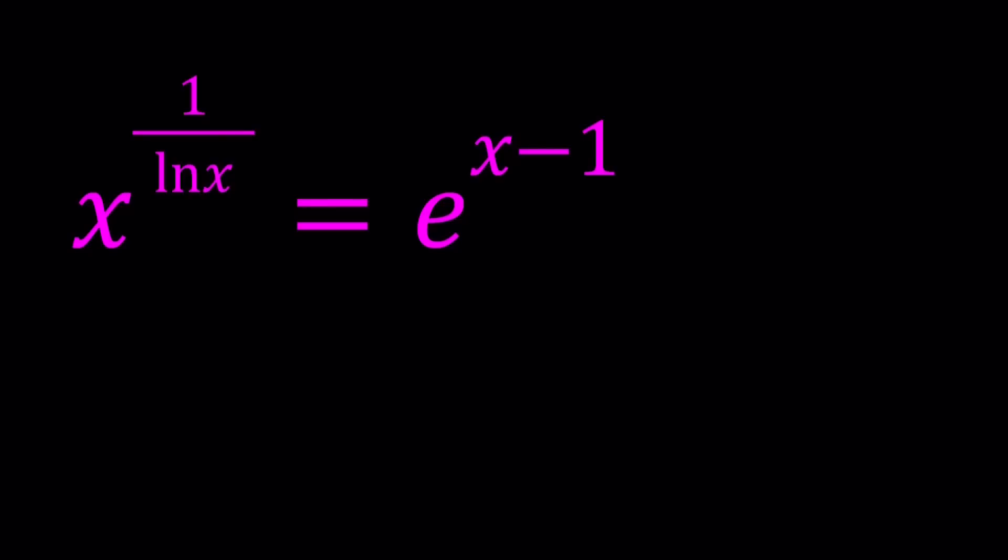We have x to the power 1 over ln x equals e to the power x minus 1. So I'm going to present two approaches and then also show you a graph. Let's go ahead and start with the first method.